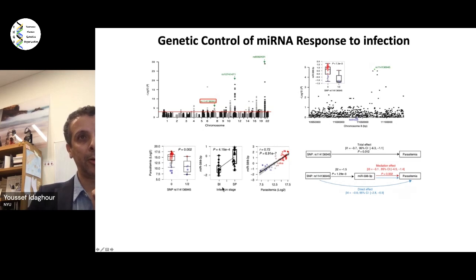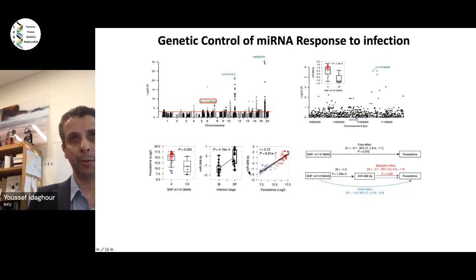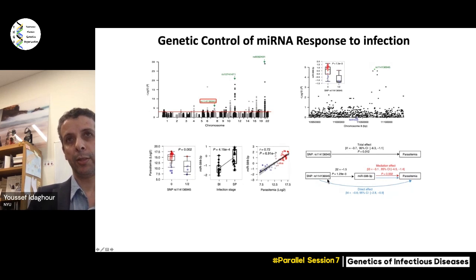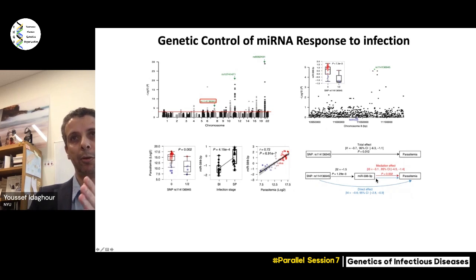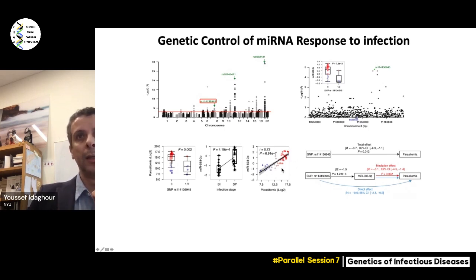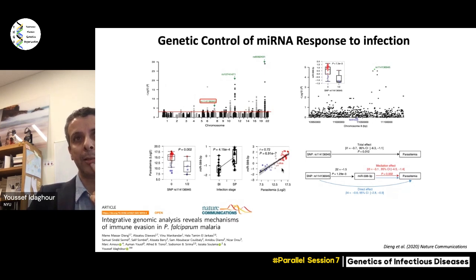We see the same signal between microRNA and infection stage in our discovery cohort, and interestingly a very nice strong positive correlation between parasitemia and microRNA. The model we came up with is suggestive that there is an effect of this SNP on parasitemia mediated by microRNA, and this was supported by statistical analysis. This is much more complex than presented here — we don't yet know for sure what the target genes of this microRNA are and how it relates to parasitemia. These results have been published last year.